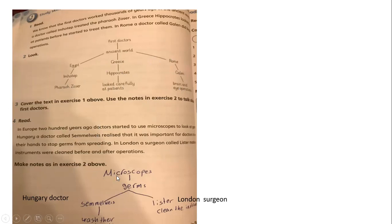Here also we have another paragraph and we are going to make an inscription about the paragraph. In Europe 200 years ago, doctors started to use microscopes to look at germs. A Hungarian doctor called Semmelweis realized that it was important for doctors to wash their hands to stop germs from spreading.